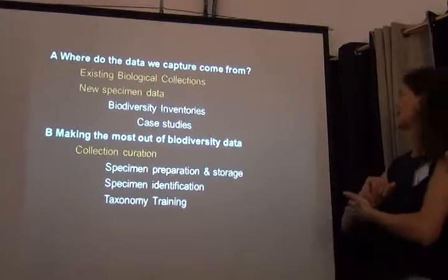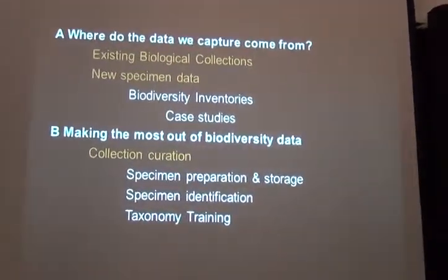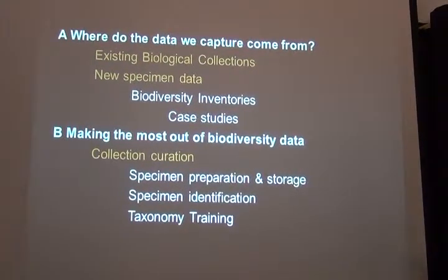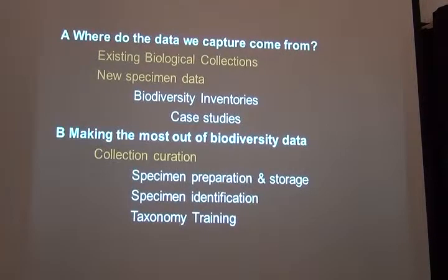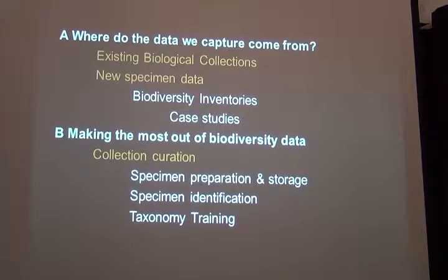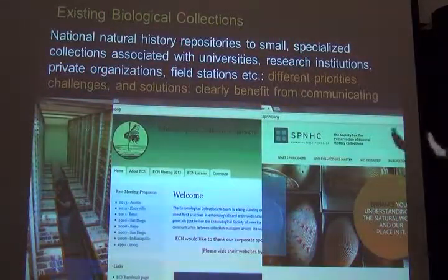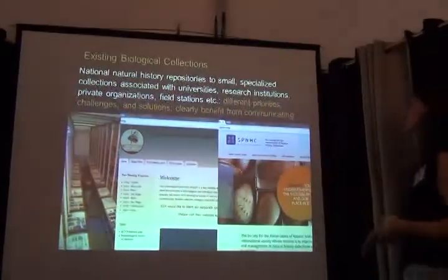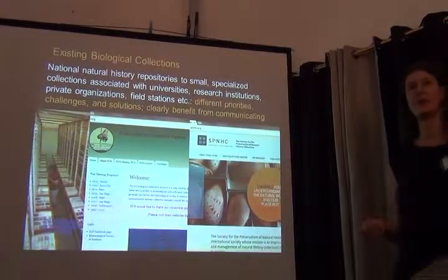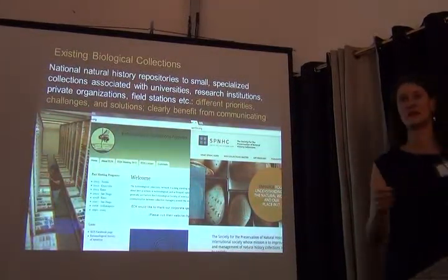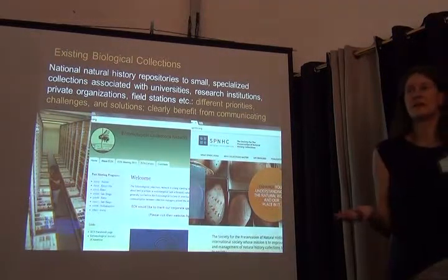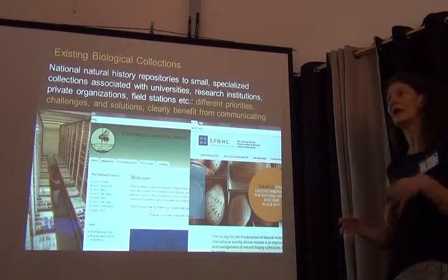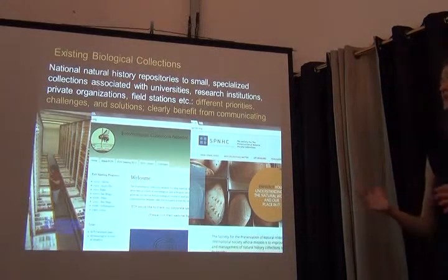For the rest of my reflections: a few more words about existing biological collections, new specimen data, and collection curation — which really has to do with data quality. Existing biological collections range from the big natural history repositories all the way down to small specialized collections. They can be associated with universities, research institutions, private institutions, or field stations, which very frequently have fairly small but quite interesting insect collections associated with them.